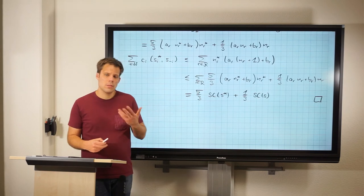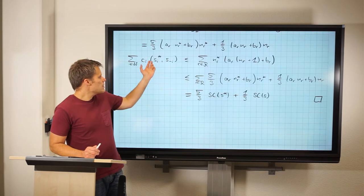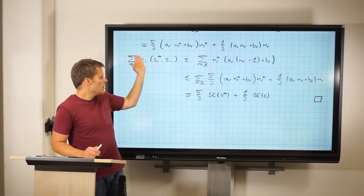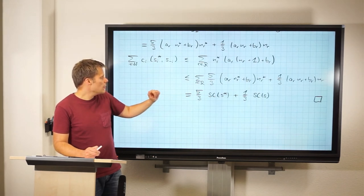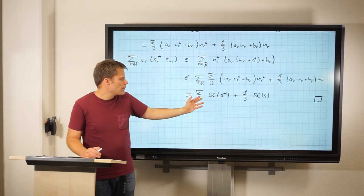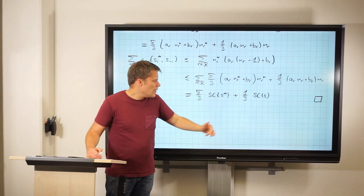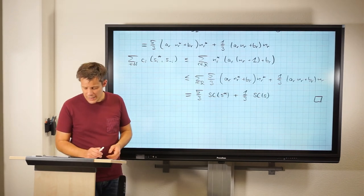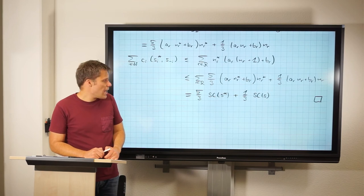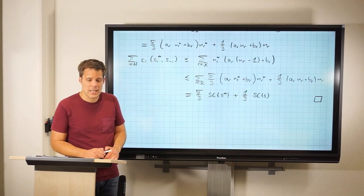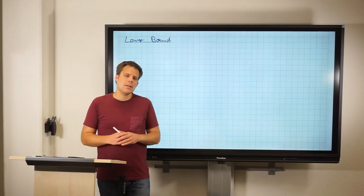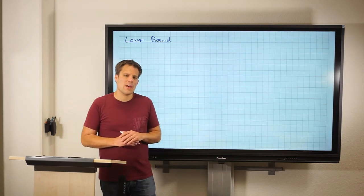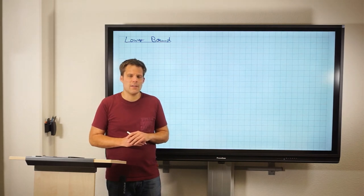This is exactly what we wanted to show. Combining all steps: SC(S) ≤ the sum of C_i(S_i*, S_{-i}) ≤ (5/3)·SC(S*) + (1/3)·SC(S), which after rearranging gives SC(S) ≤ (5/2)·SC(S*). So in every congestion game with affine delay functions, the price of anarchy for pure Nash equilibria is no larger than 5/2.